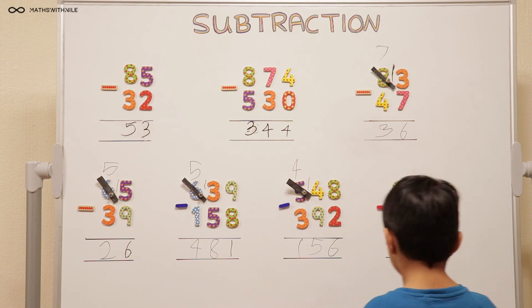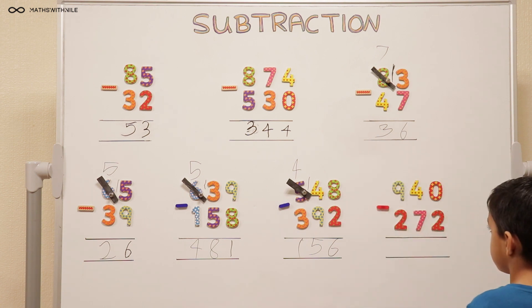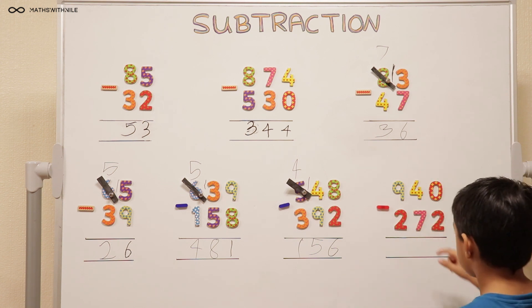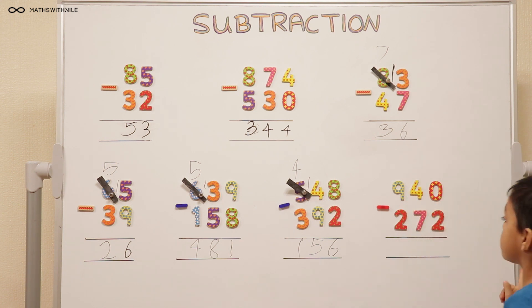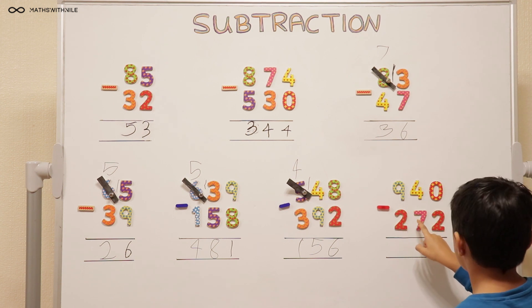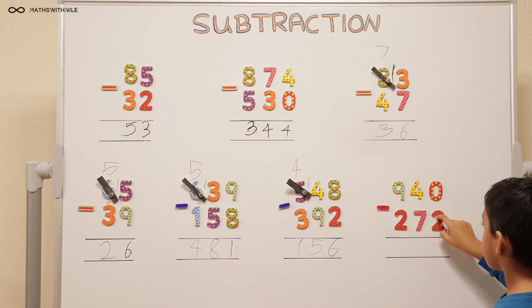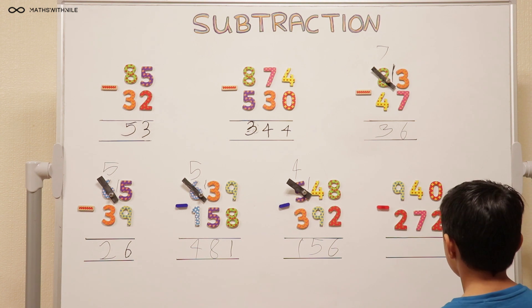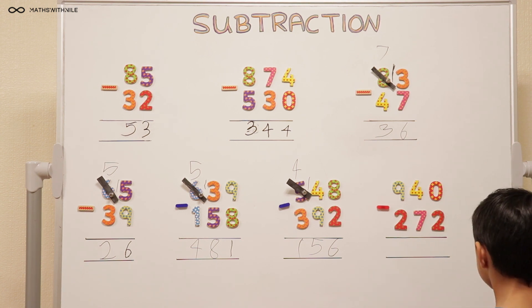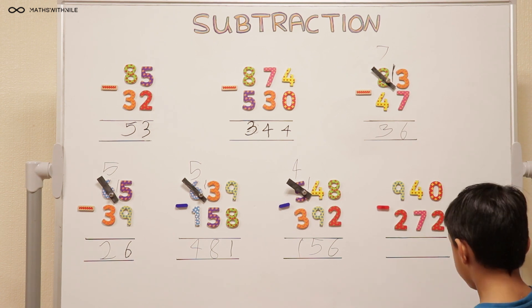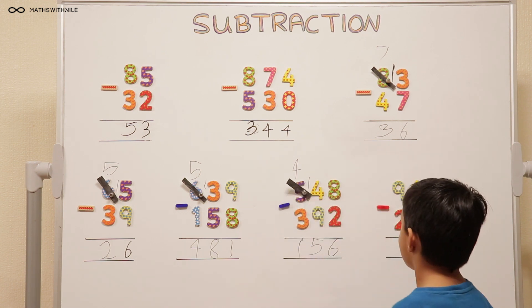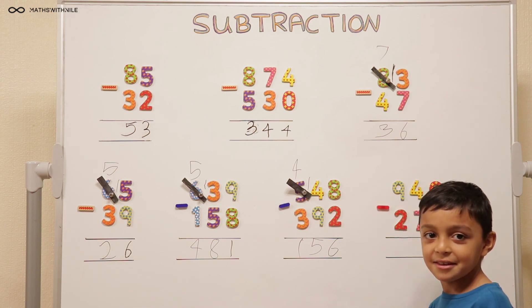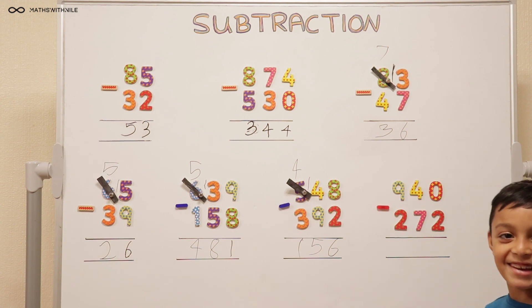The last question is even a bit trickier. I'm going to let you explain this one and go through it on your own. Make sure you stand to the side though so we can see. 940 take away 272. Can you read it again making sure that you're saying 900? 940 take away 272. So 0 take away 2 we can't do.